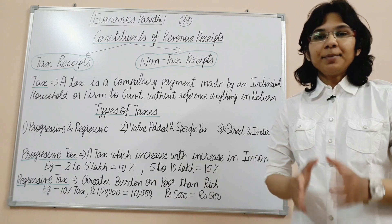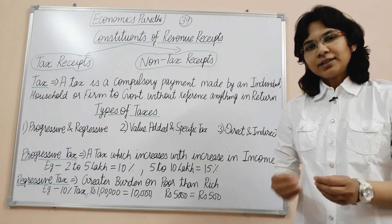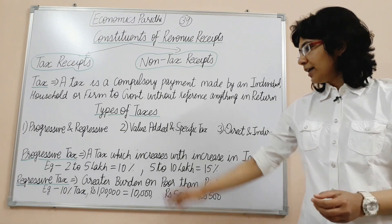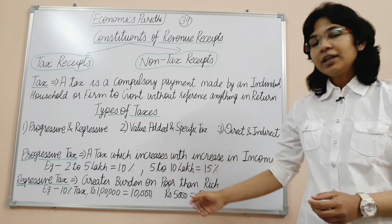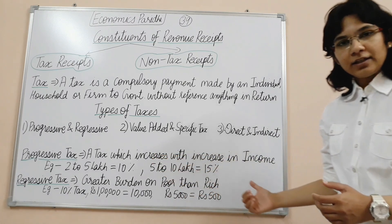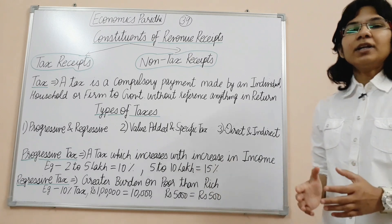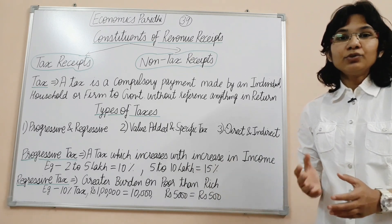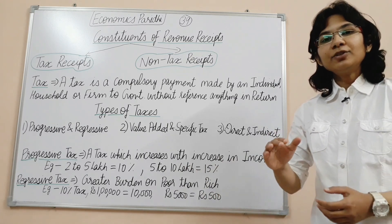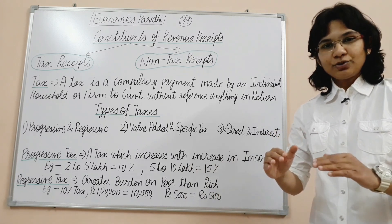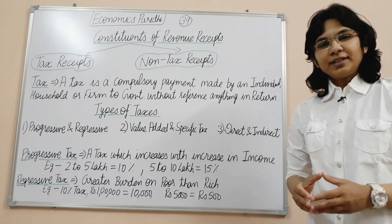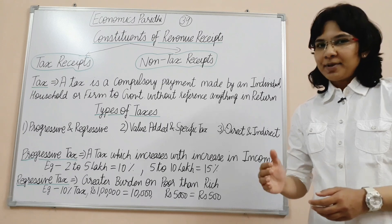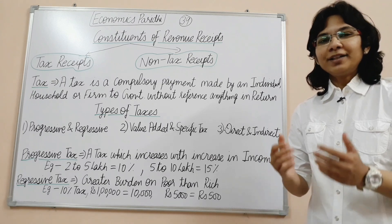What is a progressive tax? A progressive tax is a tax which increases with an increase in income. Simply put, if you are earning more money, you have to pay more tax. For example, for income between 2 to 5 lakh, a certain tax rate applies.